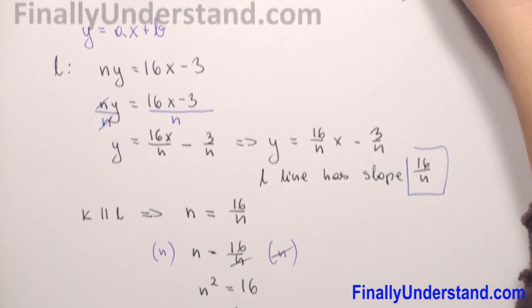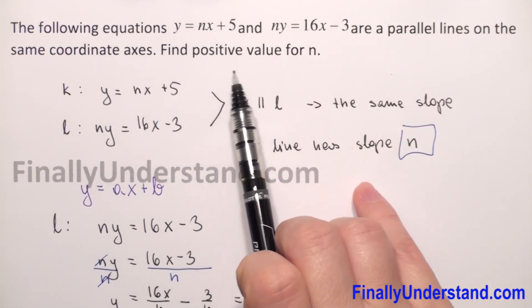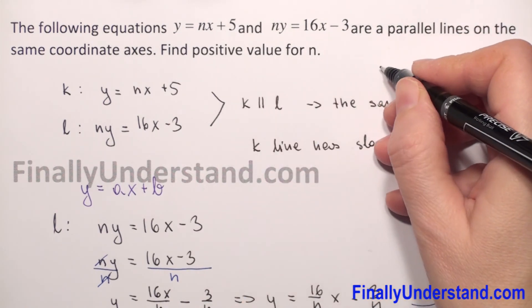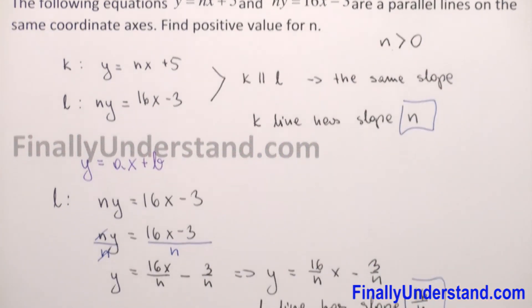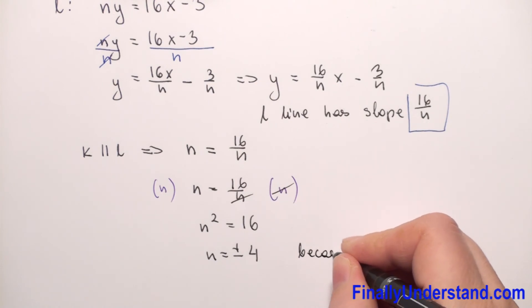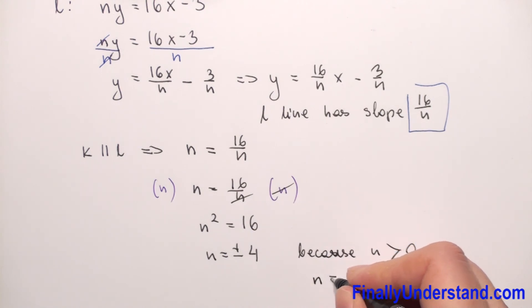But we need n to be positive. The problem asks for the positive value of n, so n must be positive, meaning n > 0. Since n > 0, we choose only the positive value for n, so n = 4.